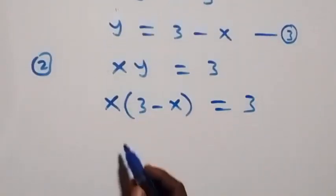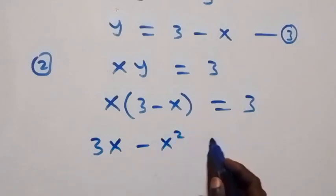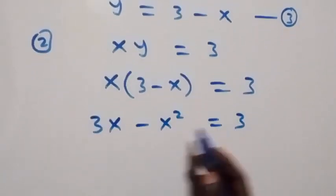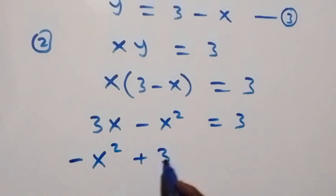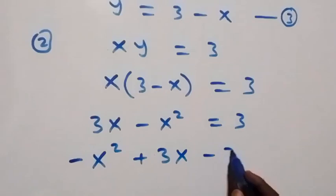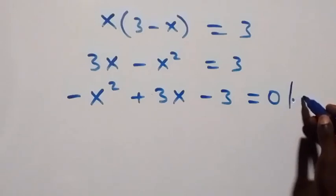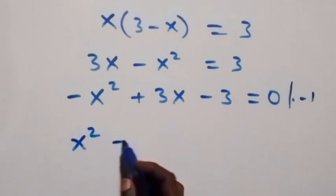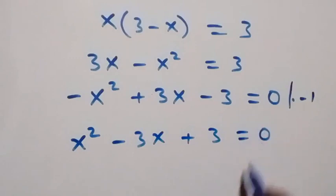Expanding the bracket, this becomes 3x minus x squared equals to 3. When we rearrange and take 3 to this side, we have minus x squared plus 3x minus 3 equals to 0. To remove the minus, we multiply through by minus 1. This equation becomes x squared minus 3x plus 3 equals to 0.